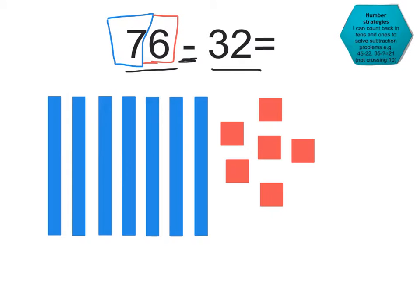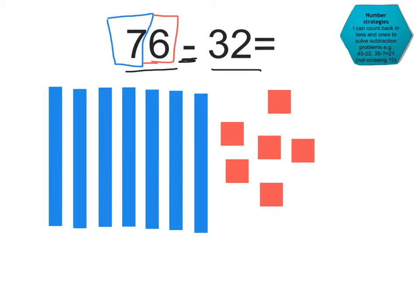So you can see I've got 7 10s and 6 1s. So that's the amount I've got here on my board. So what I want to do now is to take away 32, or 3 10s and 2 1s, and this is how I do that.